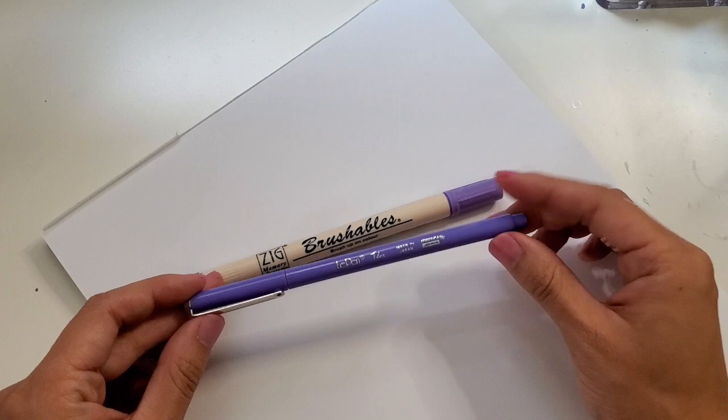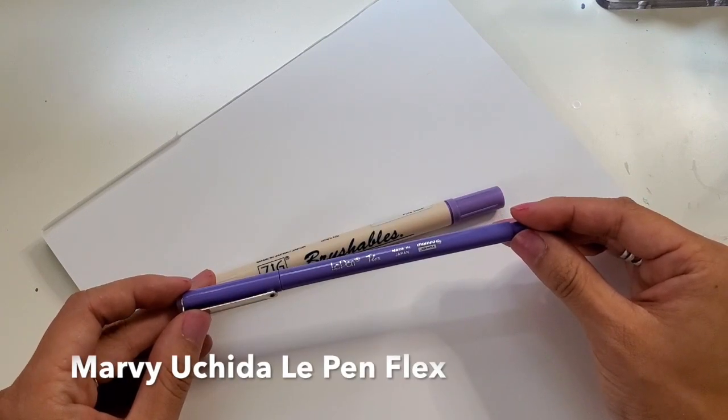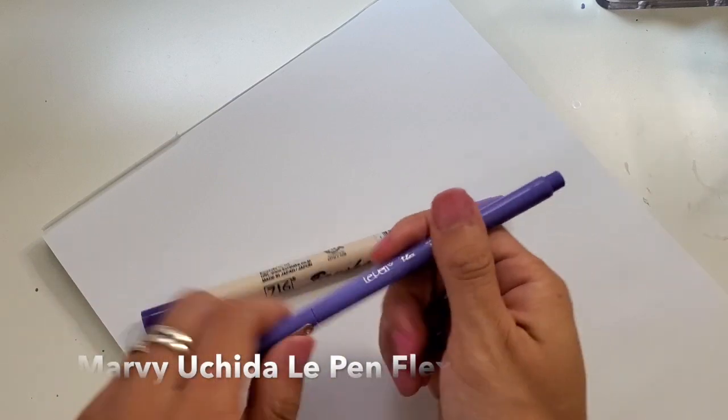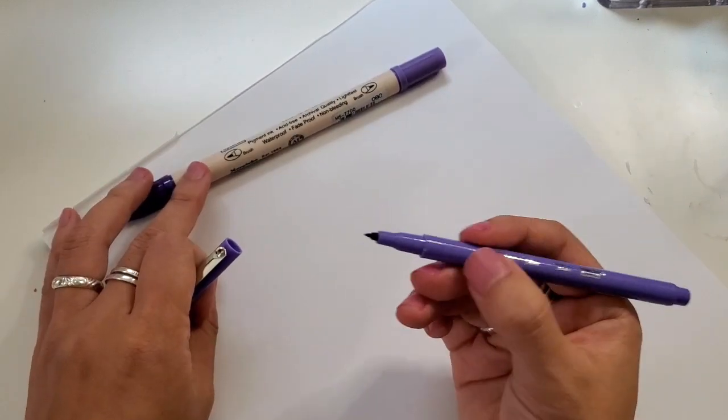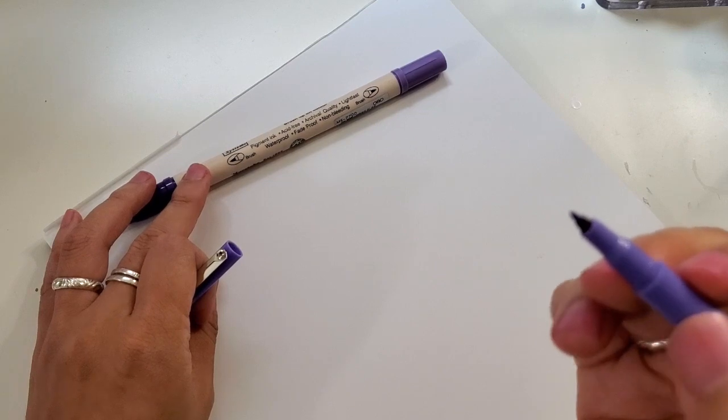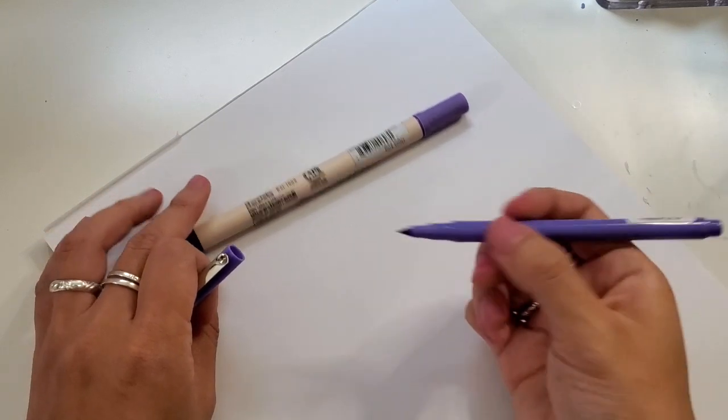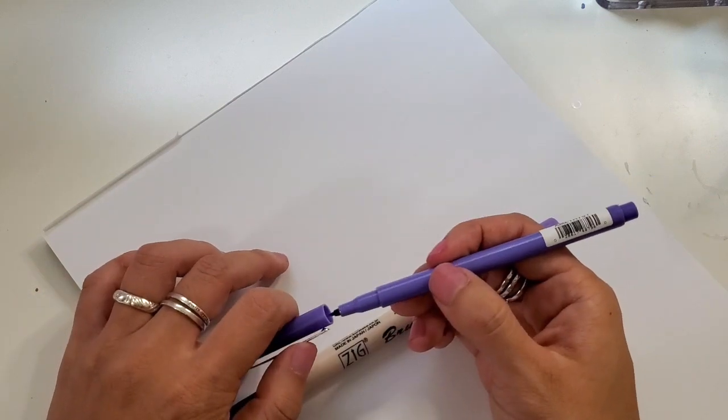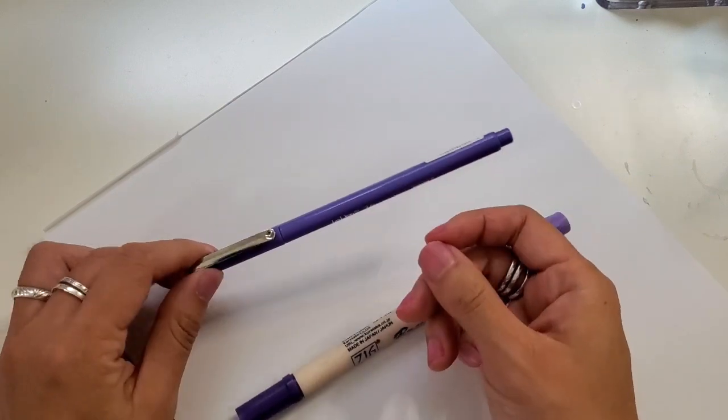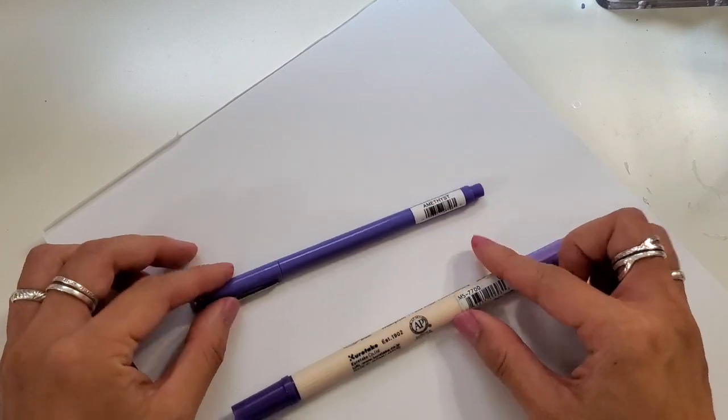And then there's this other small brush pen which is the Le Pen Flex by Marvy Uchida and these are amazing. The color is so bright and these little tips remind me a lot of a Tombow soft tip. So I will model with both of these.